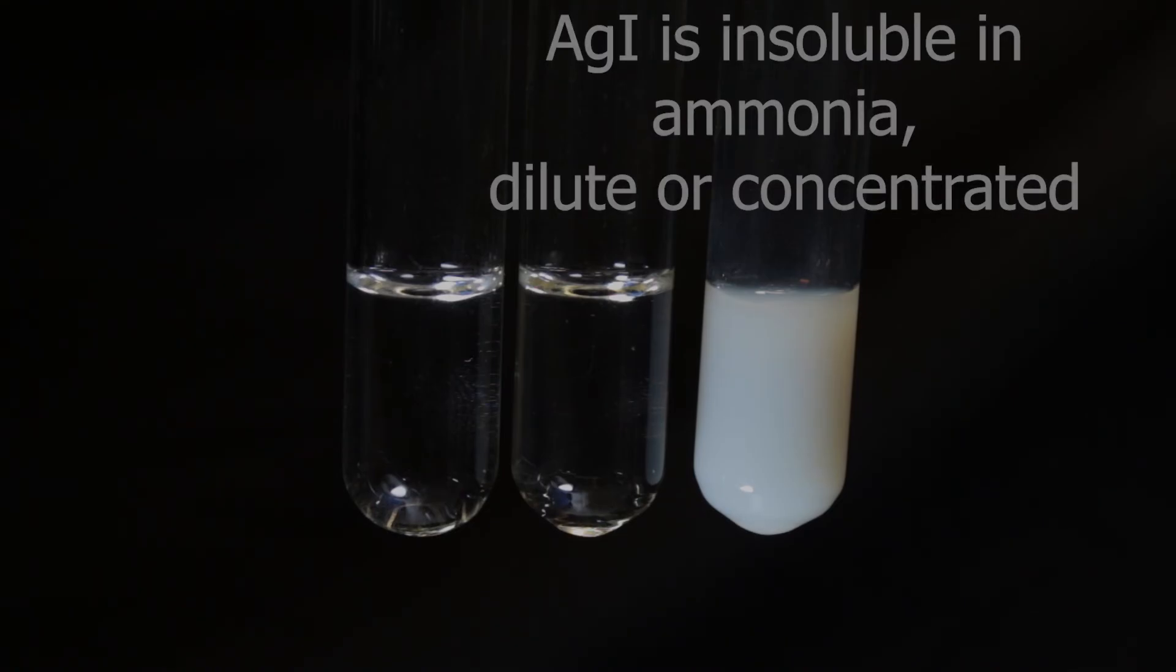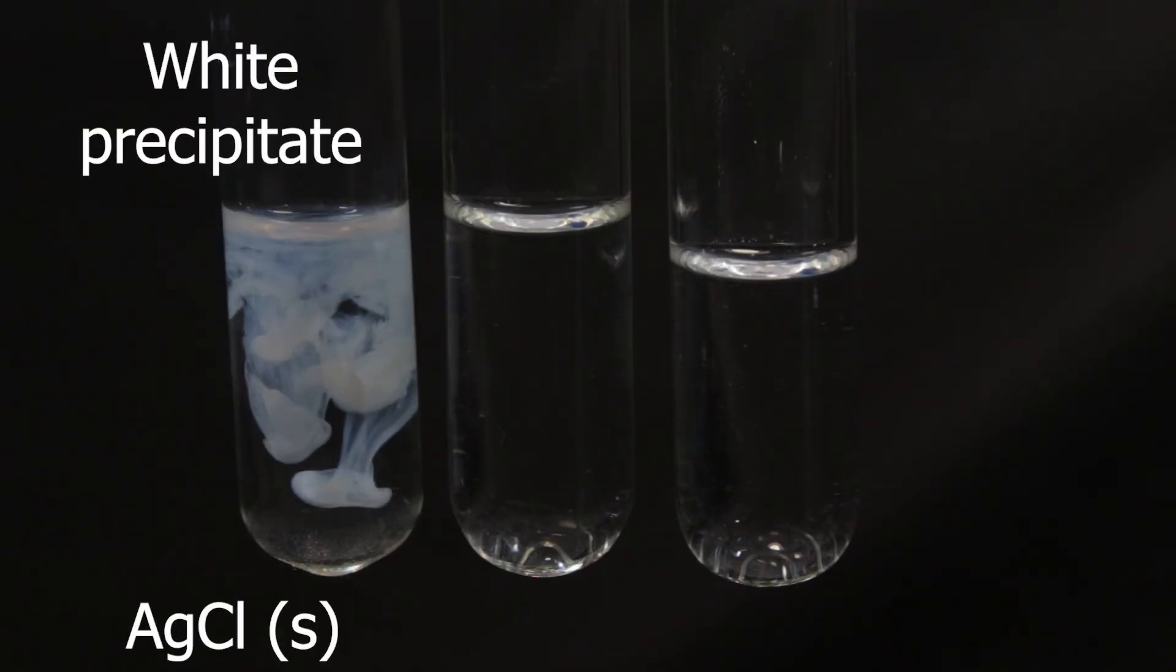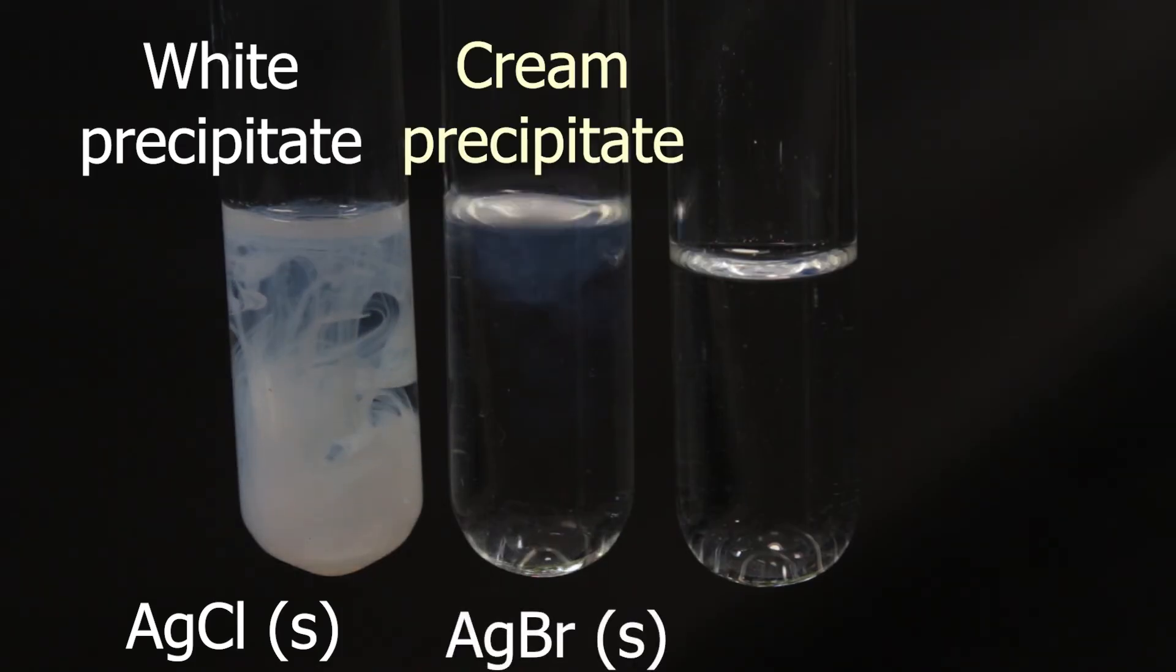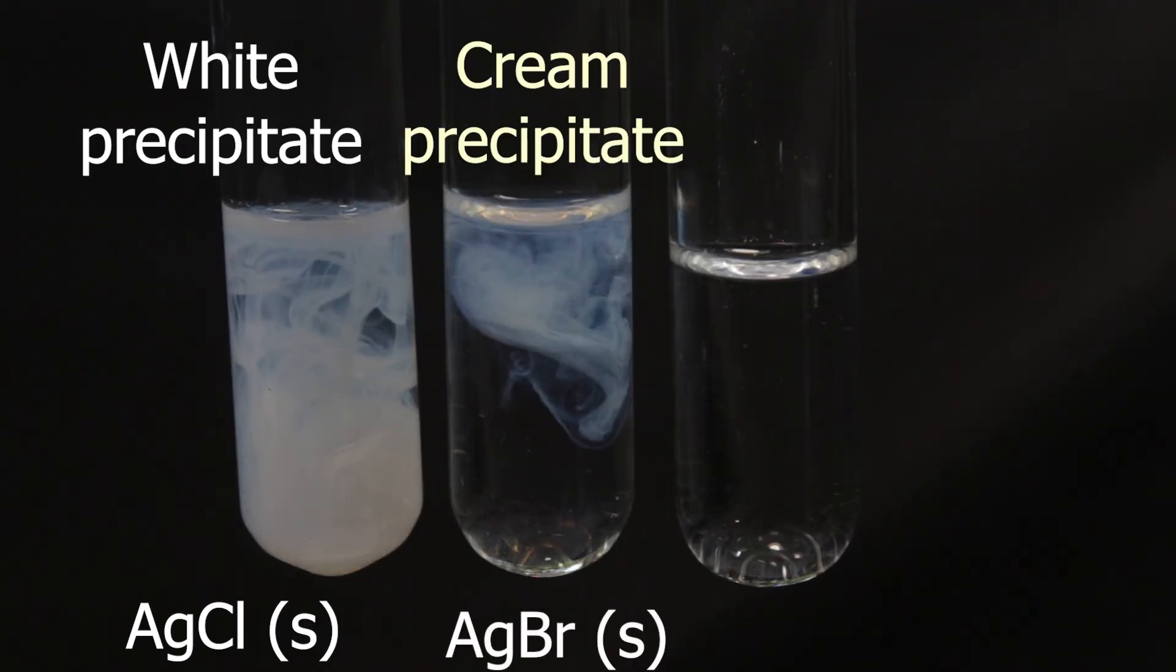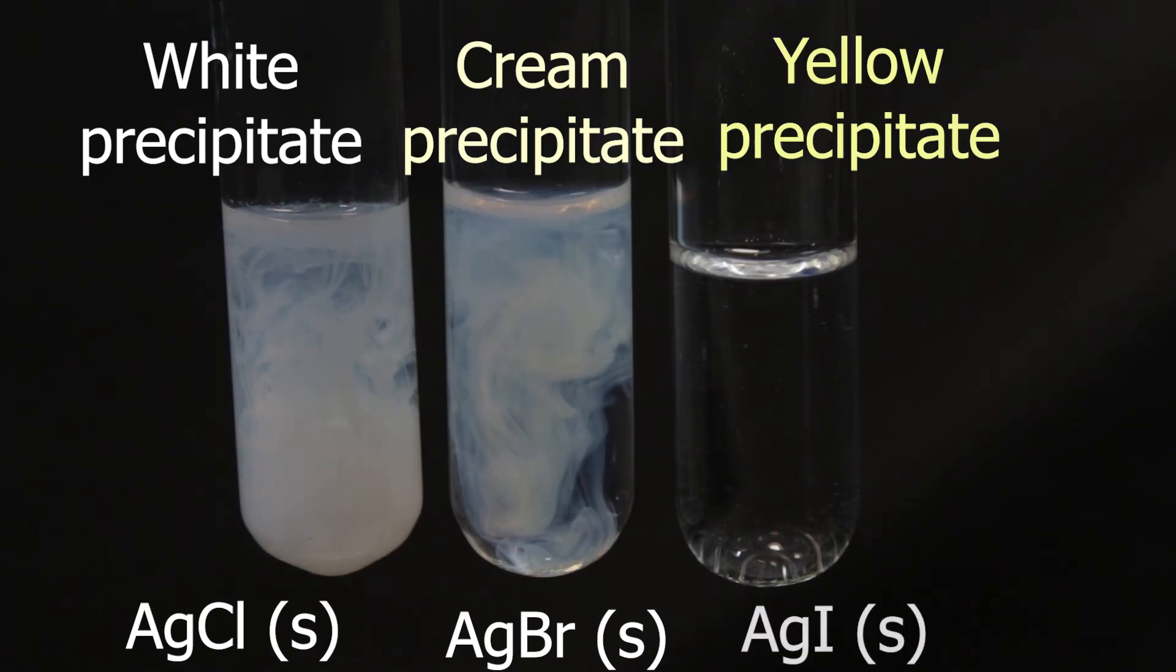So let's go again over the test. Acidify the solution with nitric acid. Add few drops of silver nitrate. Observe the color of precipitates. Silver chloride is formed in the first. Silver bromide in the second test tube. And silver iodide precipitate in the third.